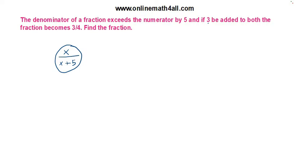In this fraction x over (x + 5), we can apply the second condition: 3 is added to both numerator and denominator. So I am adding 3 to the numerator and also 3 to the denominator. When I add 3 to both, the fraction becomes 3/4, so it must be equal to 3/4.